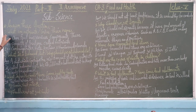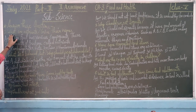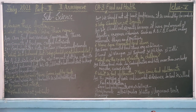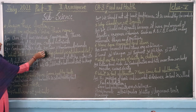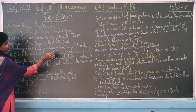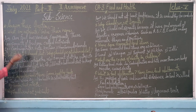The first question is: what are nutrients? Give their names. Our food is made of certain components, and these components are all nutrients. For example, carbohydrates, fats, protein, vitamins, and minerals.